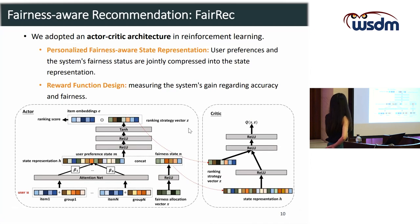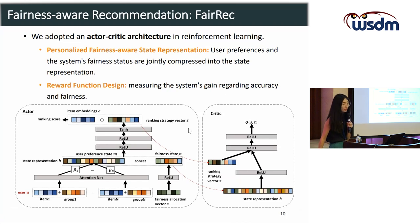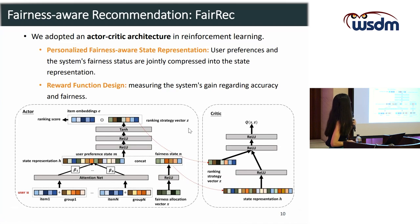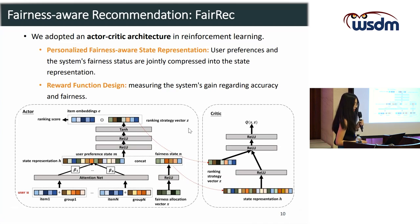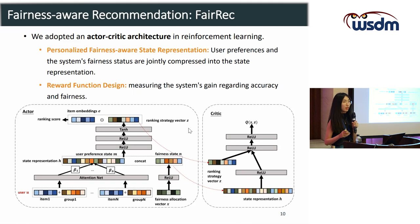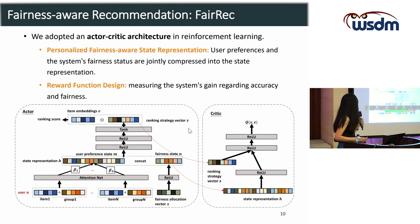FAIRREC adopts an actor-critic architecture composed of an actor network and a critic network. The actor network encodes both the user preferences and the system's fairness status as the state representation. The output of the actor network is the ranking strategy vector Z, which is a continuous lower-dimensional vector to narrow down the large action space. We compute the multiplication of the item embedding E with the ranking strategy vector Z to output the final ranking score, and the item with the highest ranking score is recommended to the user.